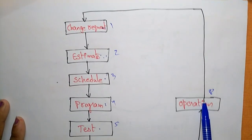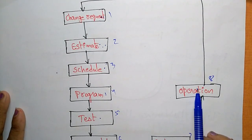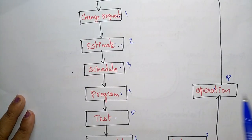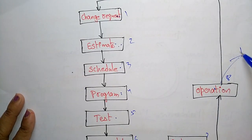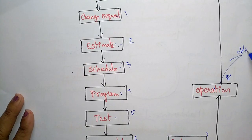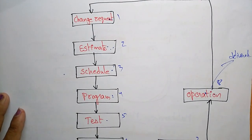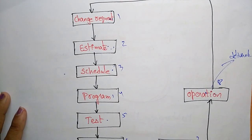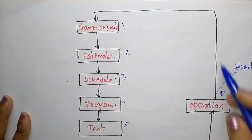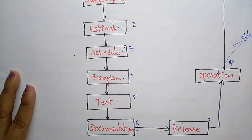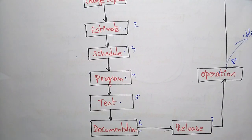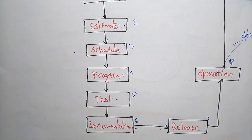If the operations satisfy the customer or management, it is delivered and put to work in the environment. Otherwise, they start again with the change request. So this is the TOTS maintenance model. Thank you.